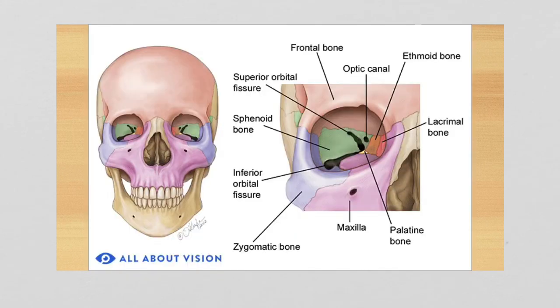The eye, with the exception of its anterior aspect — the part we can actually touch — sits encased within a conical bony orbit. That orbit is made up of seven different bones that come together to protect and stabilize the eye within the orbit itself.